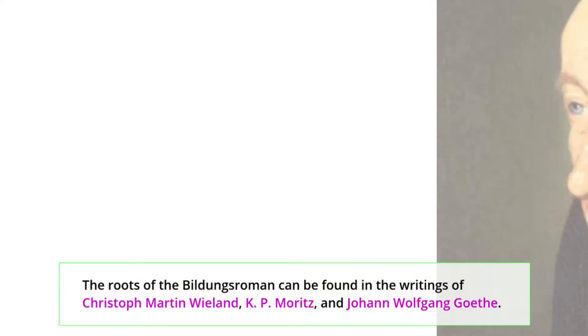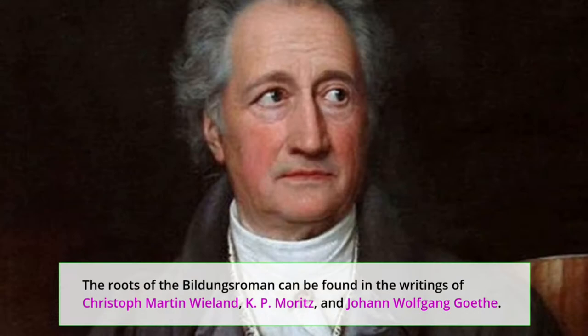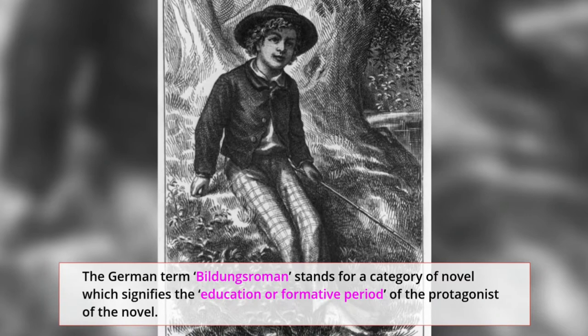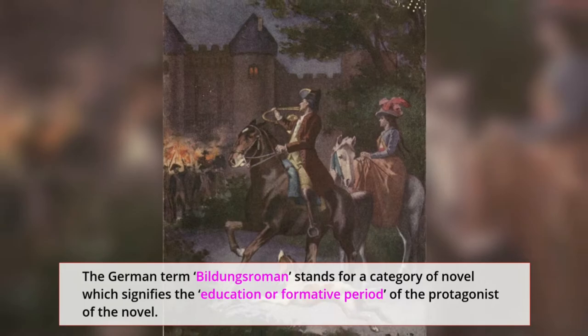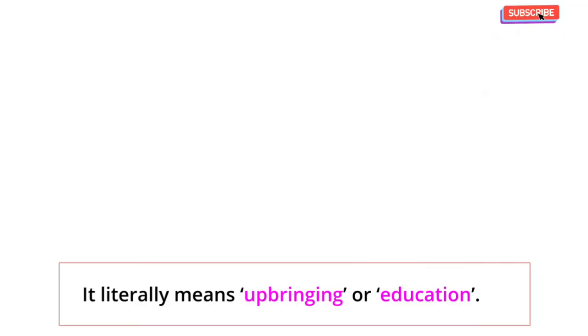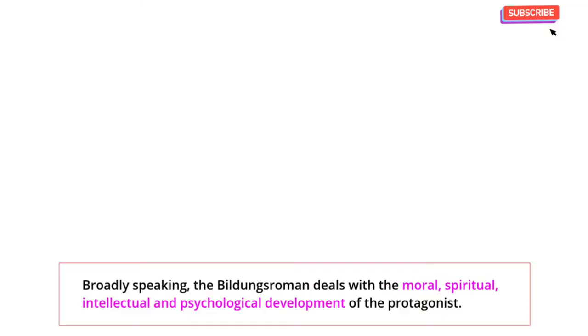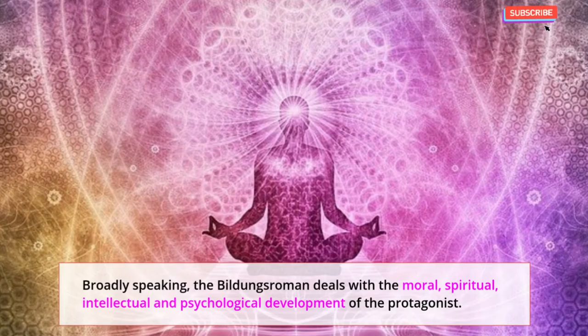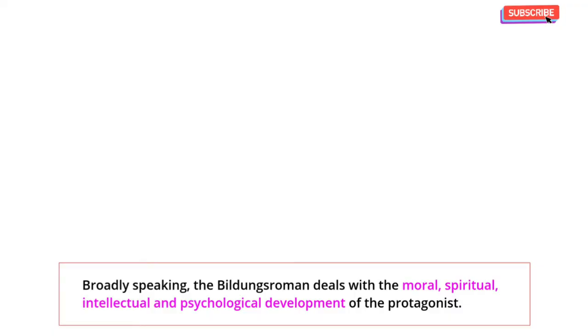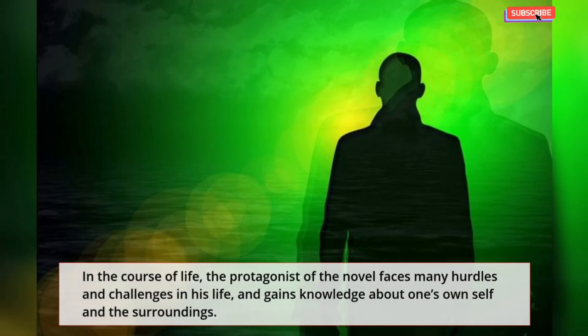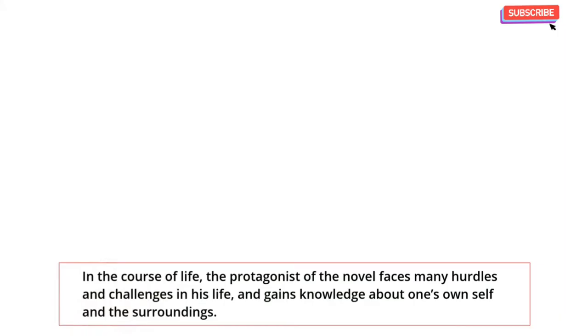The roots of the Bildungsroman can be found in the writings of Christoph Martin Wieland, K.P. Moritz, and Johann Wolfgang Goethe. The German term Bildungsroman stands for a category of novel which signifies the education or formative period of the protagonist. It literally means upbringing or education. Broadly speaking, the Bildungsroman deals with the moral, spiritual, intellectual, and psychological development of the protagonist.